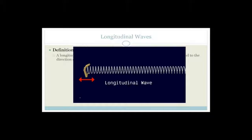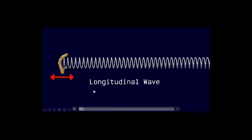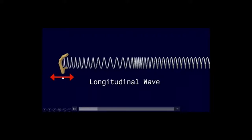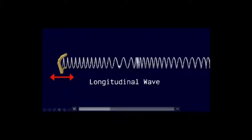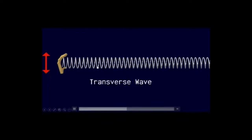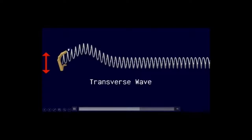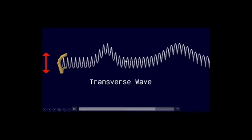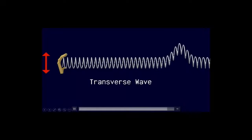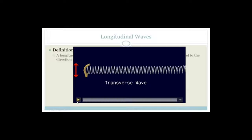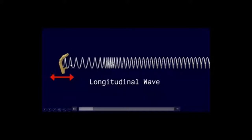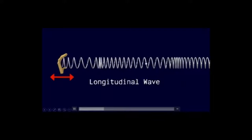If we play this for you, you can see that everything moves in the same direction — all in the same direction. Whereas in a transverse wave, the particles move up and down even though the motion of the wave is 90 degrees to it. So in a longitudinal wave, everything is parallel — the particles are moving parallel to the motion of the wave.